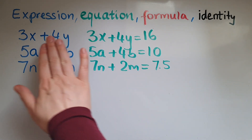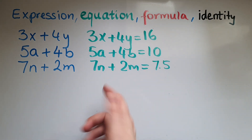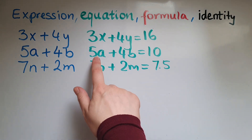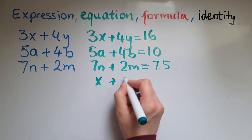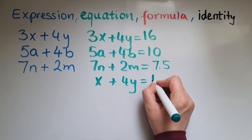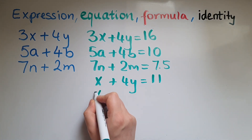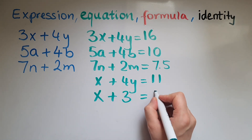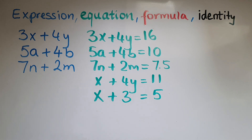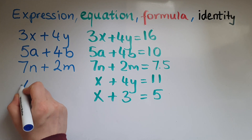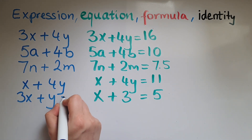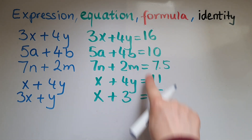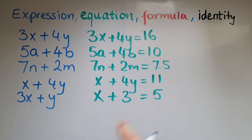An equation is an expression where it has a value — a total value. So 3x plus 4y equals 16, 5a plus 4b equals 10, or 3 plus 4y equals 27. For example, x plus 4y equals 11, x plus 4y equals 7, or x plus 3 equals 5. So there's no equality sign in an expression, but there is one for an equation.